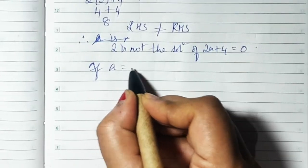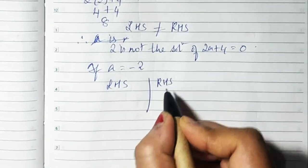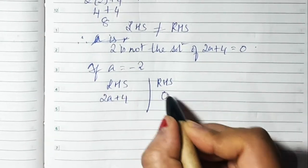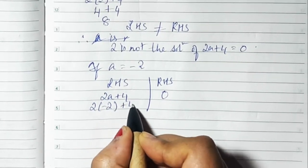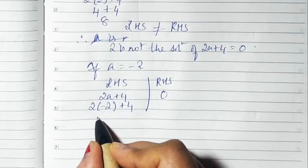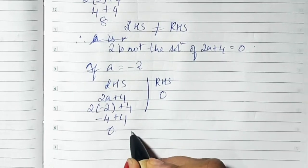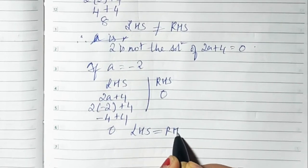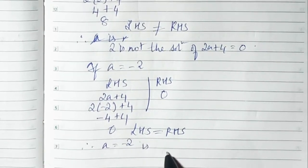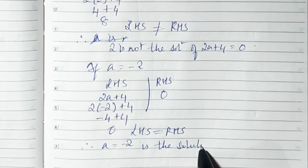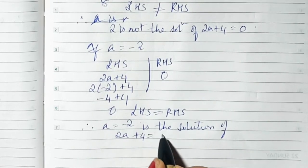If A = -2: LHS is 2A + 4 and RHS is 0. Substituting: 2 × (-2) + 4 = -4 + 4 = 0. LHS equals 0 and RHS equals 0, so LHS is equal to RHS. Therefore, A = -2 is the solution of 2A + 4 = 0.